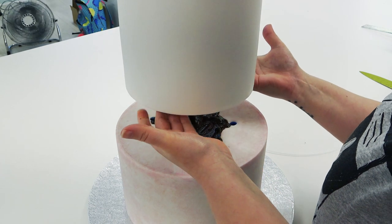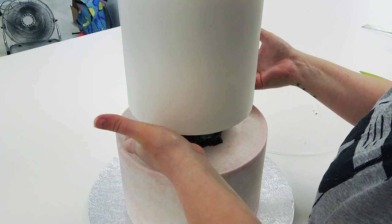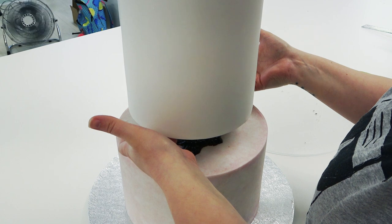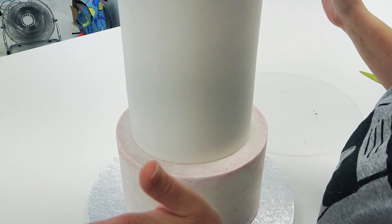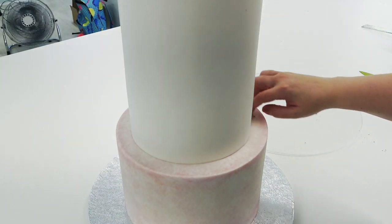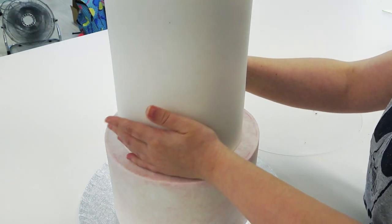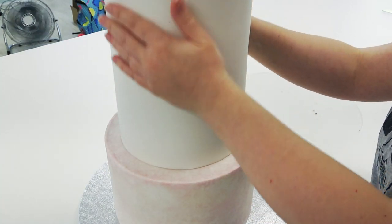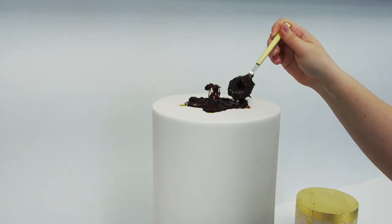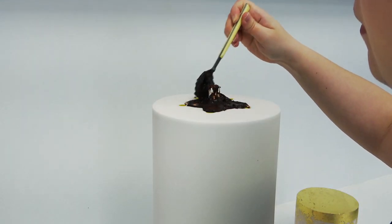Again I'm using ganache as glue and lowering the next tier down. Now this drops slower as the dowel is slowly piercing its way through the top icing allowing a little extra time just to get your fingers out. Wiggle it into position. This is where it pays to drill your cake board holes slightly wider in the middle if you need to centre it.